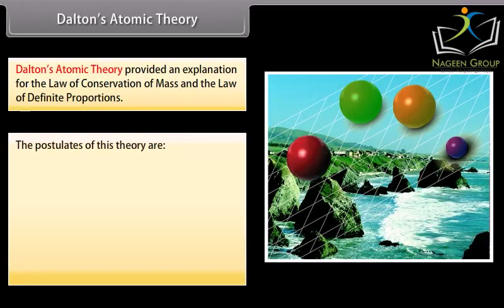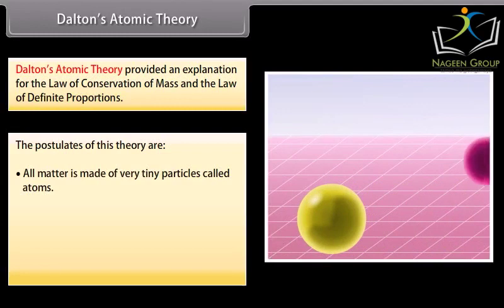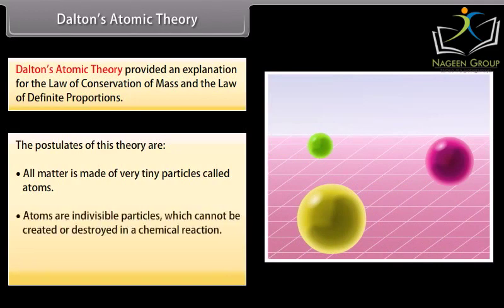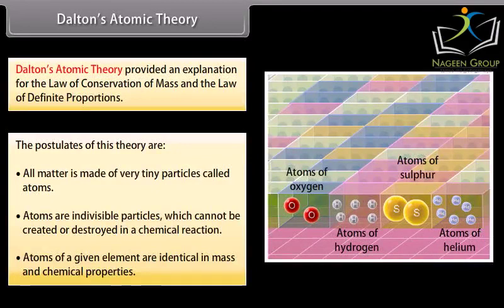The postulates of this theory are: 1. All matter is made of very tiny particles called atoms. 2. Atoms are indivisible particles which cannot be created or destroyed in a chemical reaction. 3. Atoms of a given element are identical in mass and chemical properties.